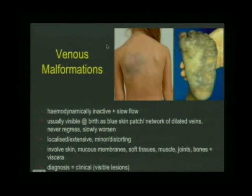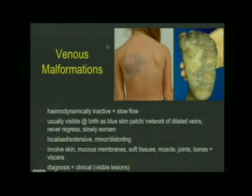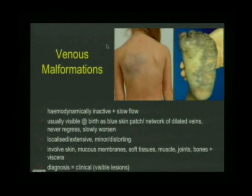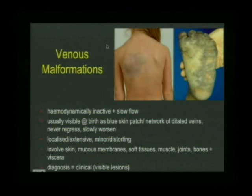Venous malformations are hemodynamically inactive - they have slow flow, no high flow, and no shunts. They're usually visible at birth. You can see this large bluish lesion on this girl's back, and another extensive lesion on the foot of this boy involving the entire lower extremity. They appear as blue skin patches, dilated veins and varicosities. Venous malformations never regress; they slowly worsen throughout life. They can be localised or extensive, and involve multiple tissues: skin, mucous membranes, soft tissues, muscle, joints, bones, and viscera.